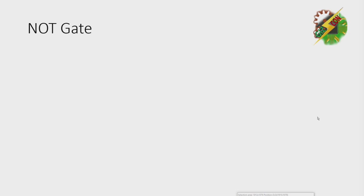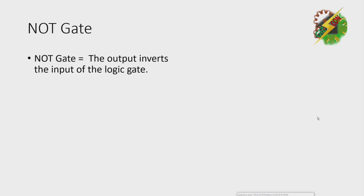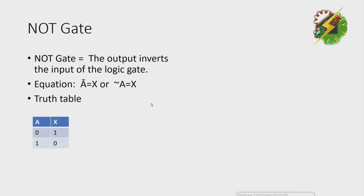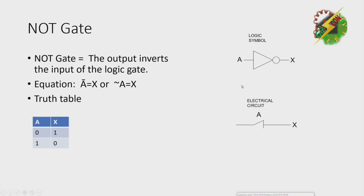Next, we have the NOT gate. The output inverts the input of the logic circuit. The equation is A-bar equals X, though some books use a different symbol. In our next lesson, we're going to use A-bar instead of that symbol. Truth table: you just need to invert or take the opposite of your input. This is the logic symbol for NOT gate, and this is the equivalent electrical circuit.